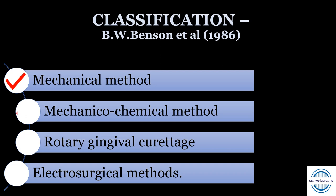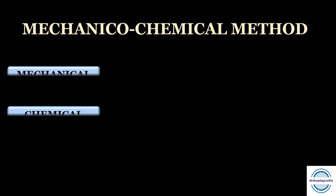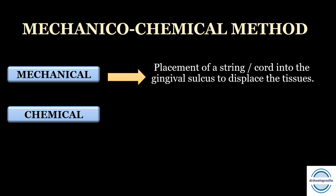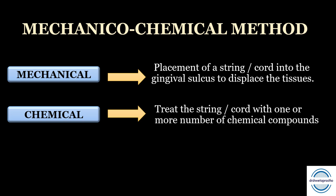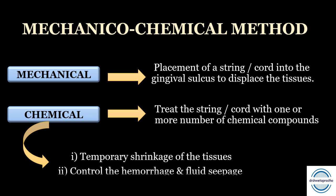Now let us discuss the mechanico-chemical method. In this, two components are combined: mechanical and chemical. The mechanical component involves physical displacement by placing a string or cord into the gingival sulcus. The chemical component treats the cord with chemical compounds to cause temporary shrinkage of tissues and to control hemorrhage and fluid seepage around the area, providing the advantage of fluid control.